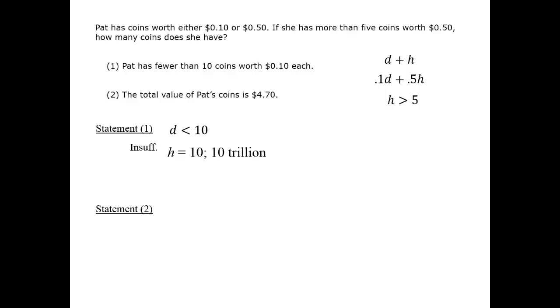Statement 2 is more promising. It indicates that .1D plus .5H equals 4.7, or, switching from dollars to cents, 10D plus 50H equals 470. Here, the fact that H is greater than 5 may play a role.